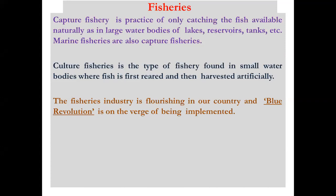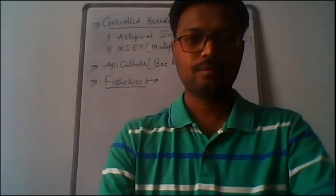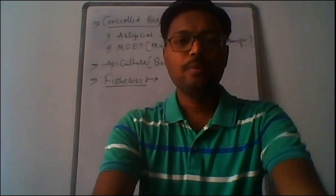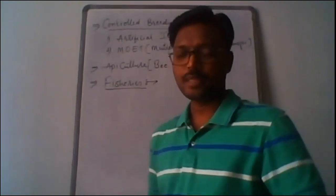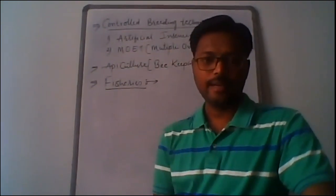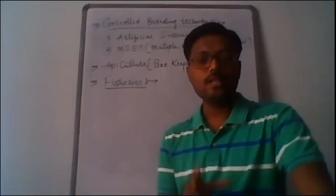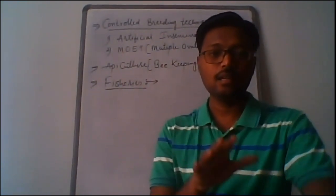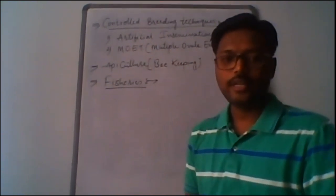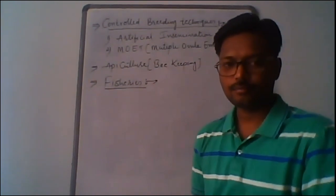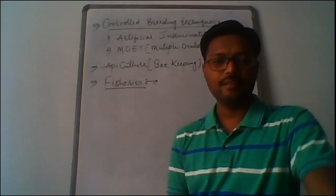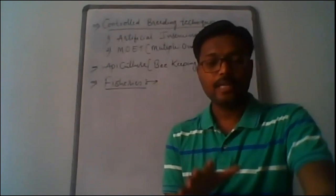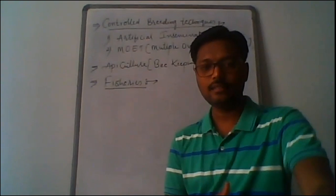There are two major types of fisheries. First, based on water source: inland fishery refers to fishing in fresh water such as rivers and ponds, while marine fishery refers to fishing in the sea. Second, based on method of rearing — either natural or artificial — there are two types: capture fishery and culture fishery. Capture fishery means catching fishes from their natural sources, whether inland or marine.